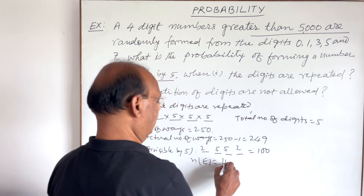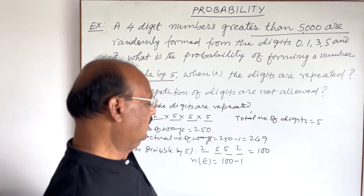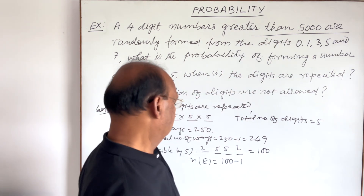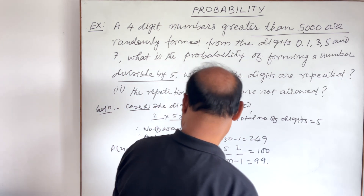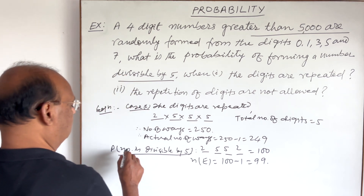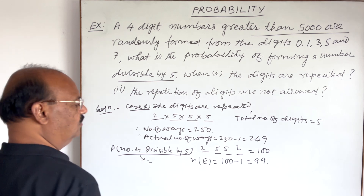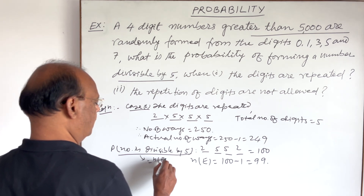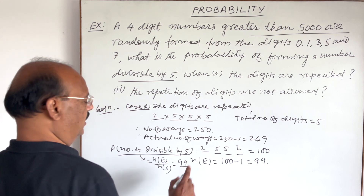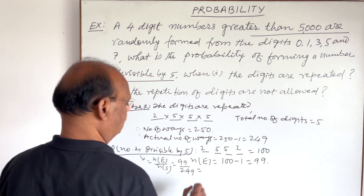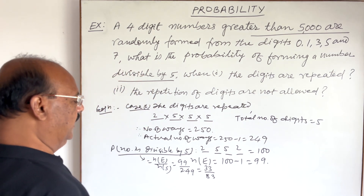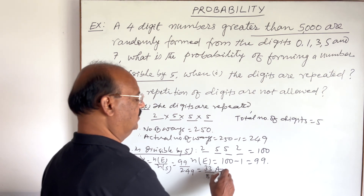So the total for n(E) is 2 × 2 × 5 × 5 = 100, minus 1 because the number 5000 has to be omitted, giving n(E) = 99. Therefore, the probability of the number being divisible by 5 is n(E) / n(S) = 99 / 249 = 33/83. This is the answer for the first part.